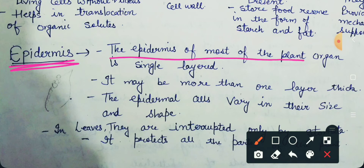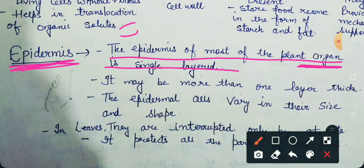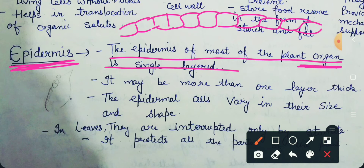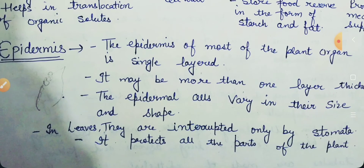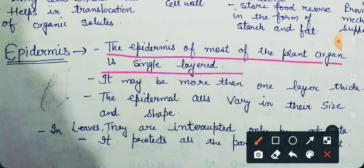So write here: the epidermis of most plant organs is a single layer. Plant organ means plant body parts — leaves, stem, root — the outermost layer is called epidermis. The epidermis structure has small cells in a layer. In some parts it can be a single layer, and in some parts it can be a double layer. Most of the plant organ epidermis is a single layer, but it may be more than one layer thick.